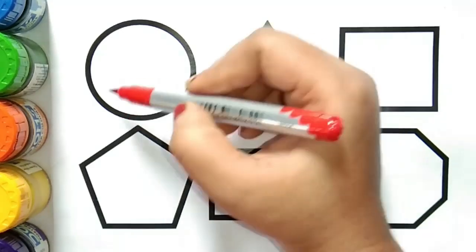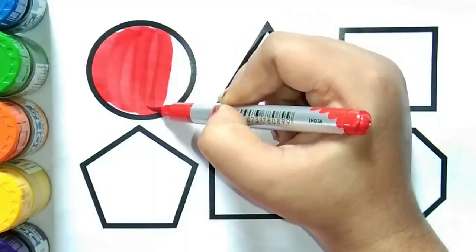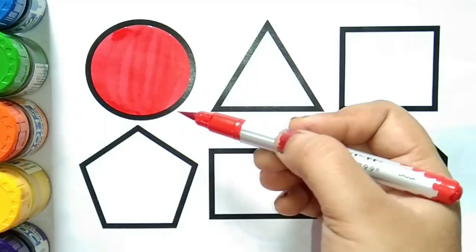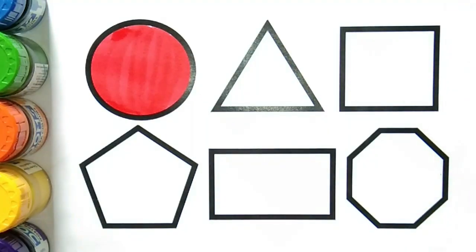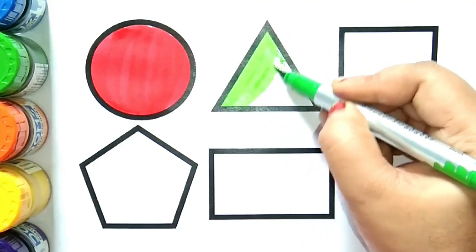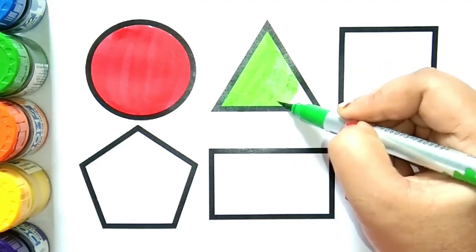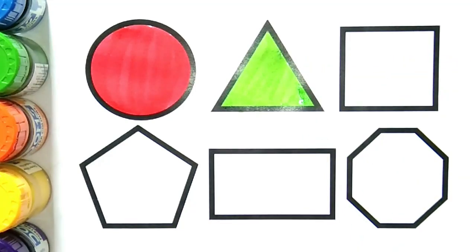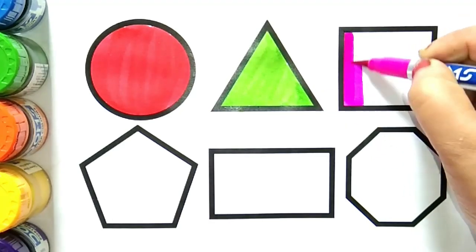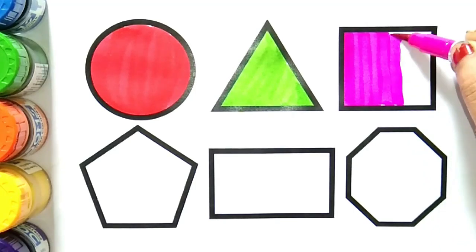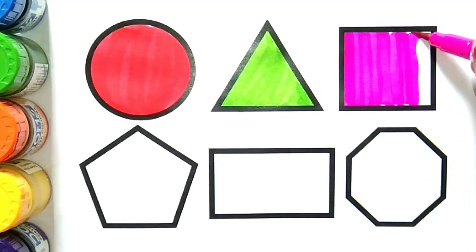Red color — this is a circle. Which shape, kids? This is a circle. Light green color — this is a triangle. Which shape, kids? This is a triangle. Pink color — this is a square. Which shape, kids? This is a square.